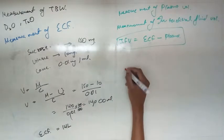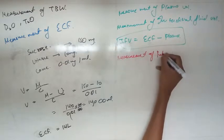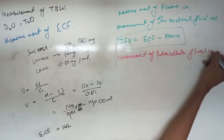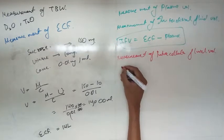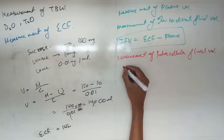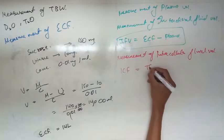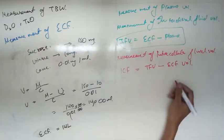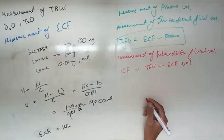Measurement of intracellular fluid volume: it also cannot be measured directly; it is calculated. If we subtract extracellular fluid from the total volume of fluid in the body, we get the intracellular fluid. So: Intracellular fluid volume = Total fluid volume − Extracellular fluid volume. That covers measuring the volume of fluids inside the body.